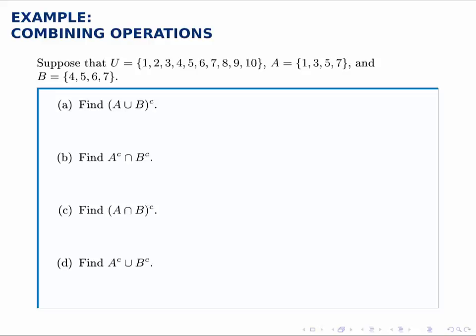In this example, we'll get a little bit more practice working with set operations: union, intersection, and complement. We're given a universal set U, and then we're given two sets A and B. And we're told to find each of these pieces, so we need to read the notation and understand what it means.